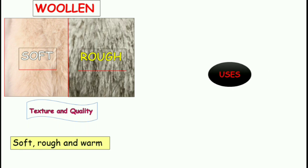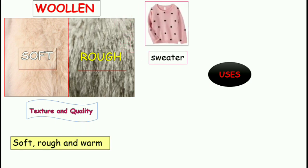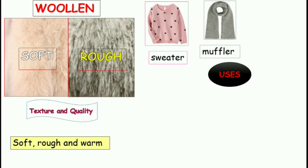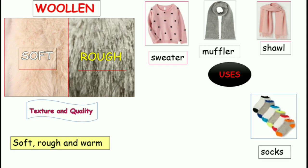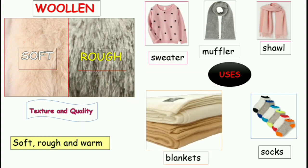Woolen material keeps us warm, so we use it in winter when it's cold. Now let's study its uses. With woolen material we can make a sweater, a muffler which is worn around the neck, a shawl which can be used around the neck or shoulder depending on how you want to cover yourself, socks to keep our feet warm, and woolen blankets which we use to cover our bodies when we sleep in winter.